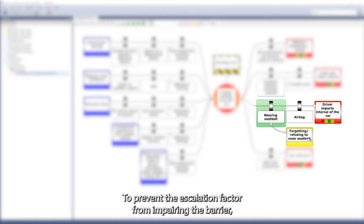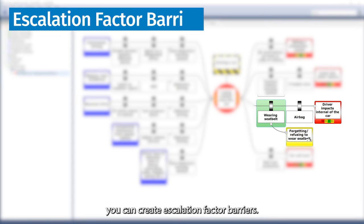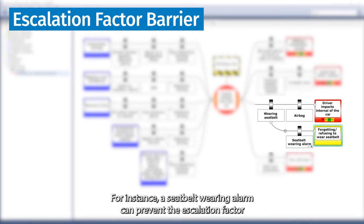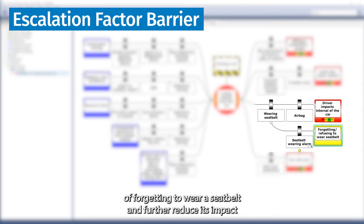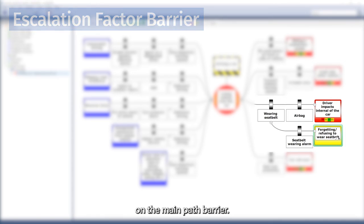To prevent the escalation factor from impairing the barrier, you can create escalation factor barriers. For instance, a seatbelt-wearing alarm can prevent the escalation factor of forgetting to wear a seatbelt and further reduce its impact on the main path barrier.